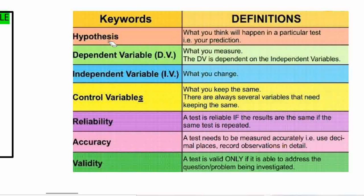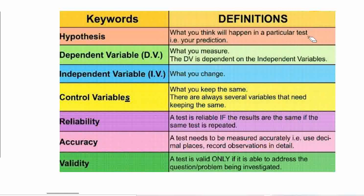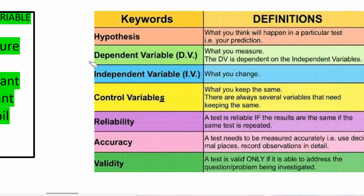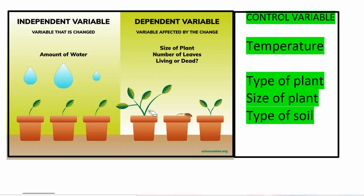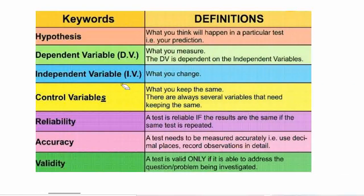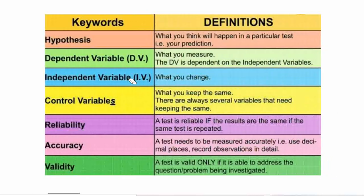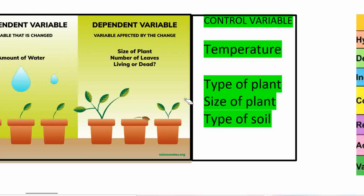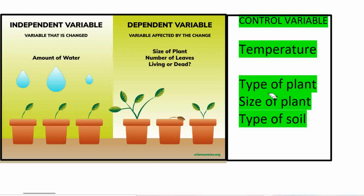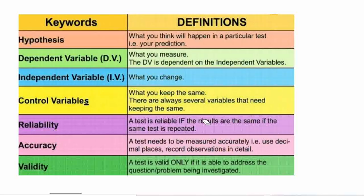Now here are the key terms. Hypothesis is what you think will happen in a particular test — your prediction. Dependent variable (DV) is what we measure in the experiment, for example the size of the plant. Independent variable (IV) is what we change — in the previous experiment, the amount of water. Control variable is what we keep the same — the same temperature, same type of plant, same size of plant, and same type of soil. Reliability means a test is reliable if the results are the same when the test is repeated. Accuracy means measurements must be taken accurately — use decimal places and record observations in detail. Validity means a test is valid only if it is able to address the question or problem being investigated.